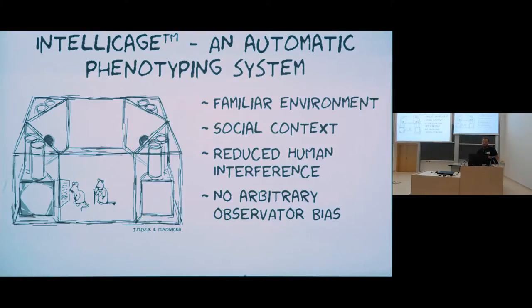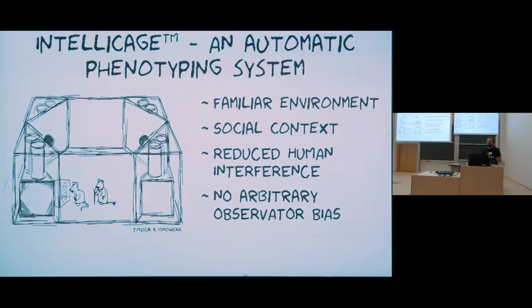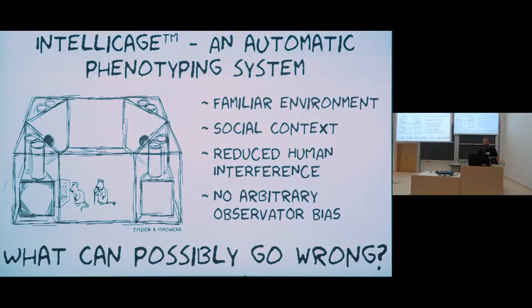For example, you may put sweetened water in one drinker and pure water in the other, then check how fast animals learn to nose-poke to the bottle containing the reward. So we have a system which greatly reduces stress by testing animals in a familiar environment and in a social context. The system provides good isolation from the human observer and greatly reduces observer bias.